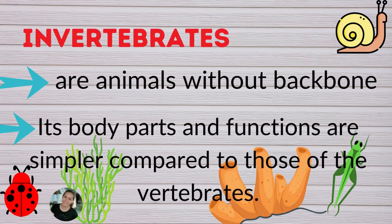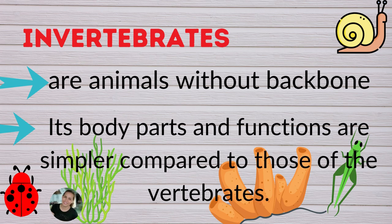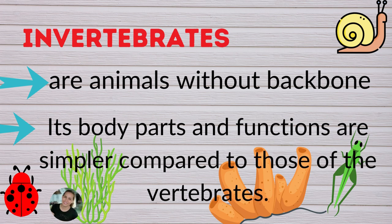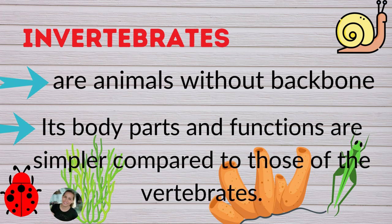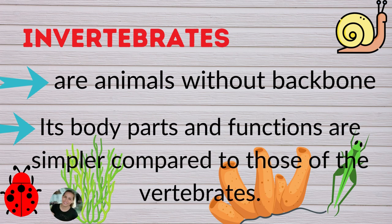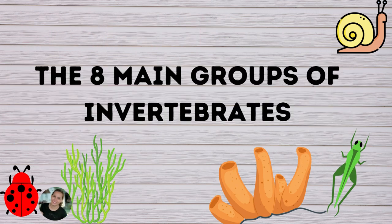Invertebrates are animals without a backbone. Their body parts and functions are simpler compared to those of the vertebrates. There are eight main groups of invertebrates.